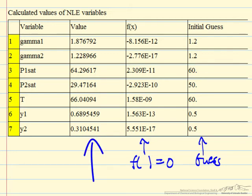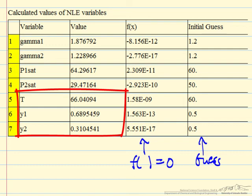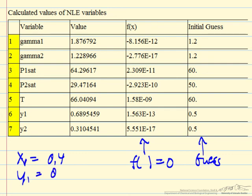And then here are our final answers. They're certainly not accurate to this many significant figures. This is just what comes out of POLYMATH, temperature, and then the mole fractions. So we're enriched, since x1 is 0.4 and y1 is 0.69, we're enriched in component 1.